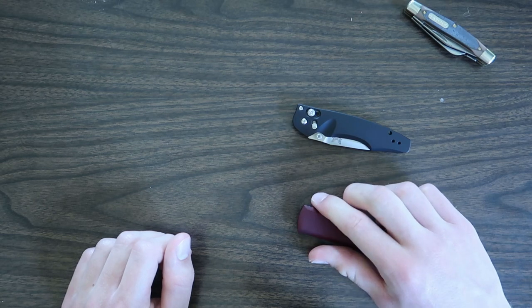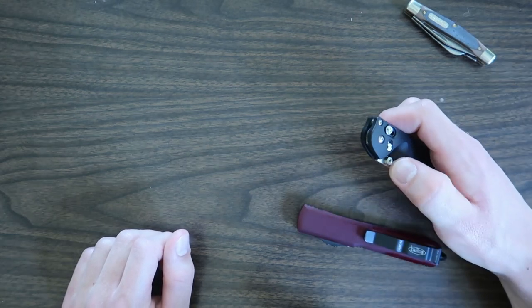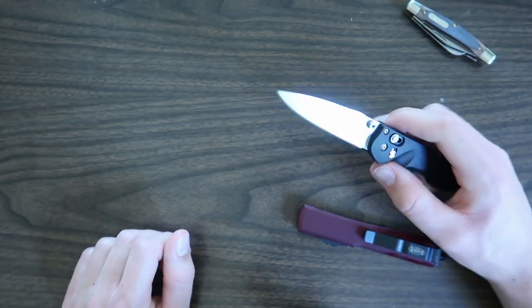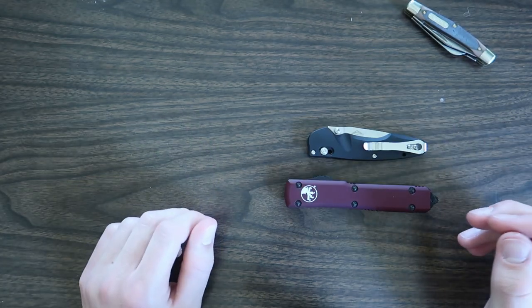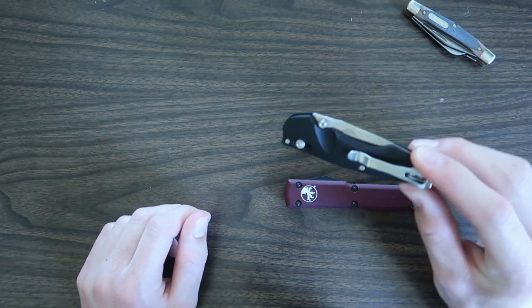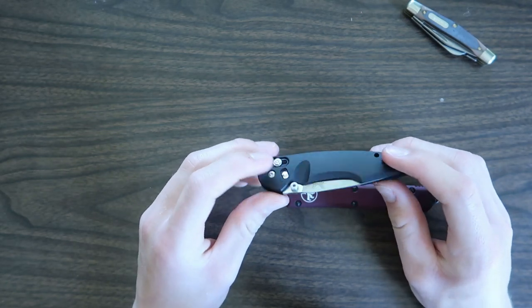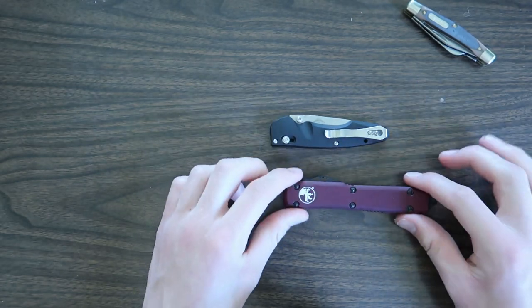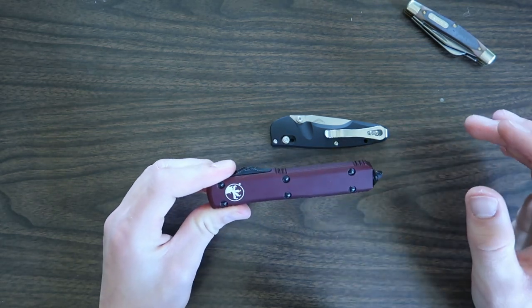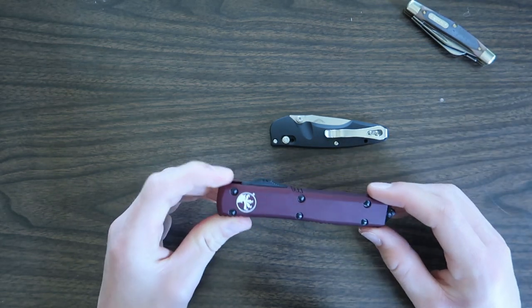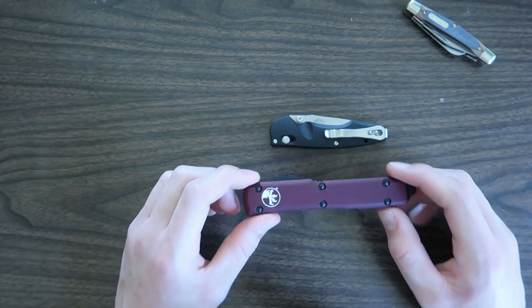So on the Benchmade Emissary, this S30V steel can be sharpened with regular knife sharpeners. Both knives come with a warranty. You have the Benchmade warranty. They will resharpen your knife for you and tune it up if you need it to be done. And on the Microtech Ultratech, it has a warranty that no matter what happens to the knife, you can send it to them and they will fix this knife back up for you, whatever needs to be done.